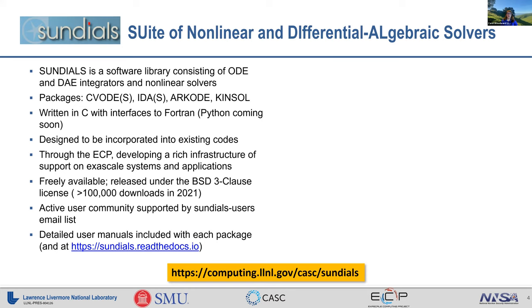Sundials is a software library consisting of ODE and DAE integrators and nonlinear solvers. We have six packages: CVODE, CVODES, IDA, IDAS, ARKode, and KinSol. CVODES and IDAS are sensitivity analysis variants, providing forward and adjoint sensitivity. Sundials is written in C with interfaces to Fortran, and Python interfaces are coming soon — we're hoping this fiscal year they'll be released. Sundials codes have been designed to be incorporated into existing codes, abstracting out data dependencies and solver dependencies.